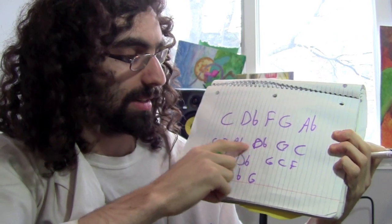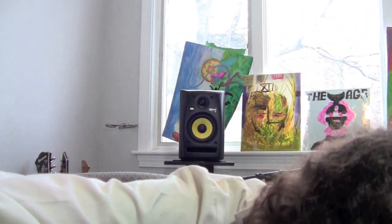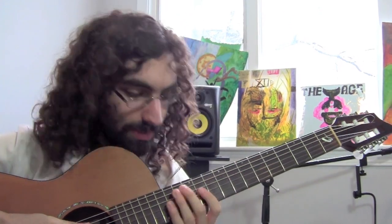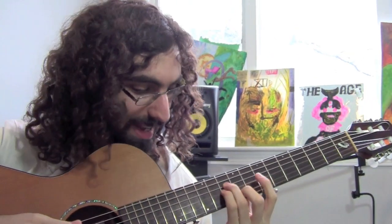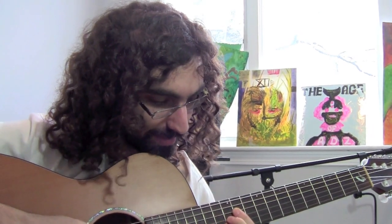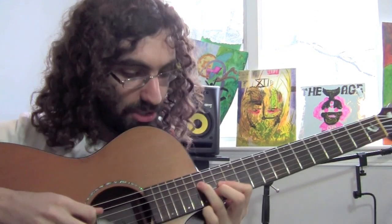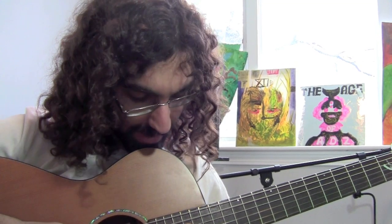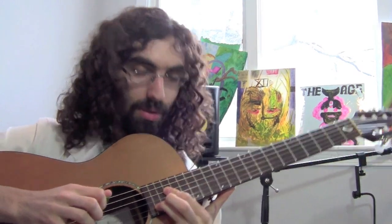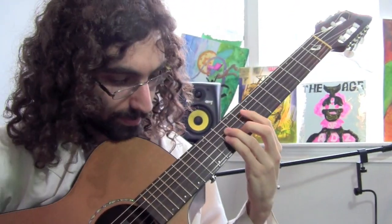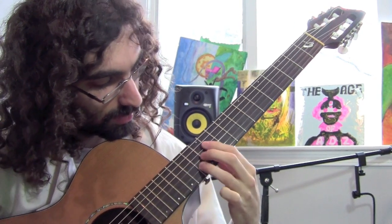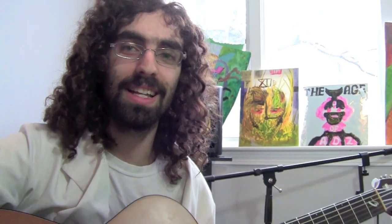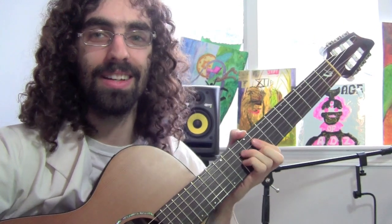Let's hear how this chord progression sounds. So first was C, F, A-flat. Then we had D-flat, G, C. Then we had F, A-flat, D-flat. Then we had G, C, F. Then finally we had A-flat, D-flat, G. It sounds like this. That's pretty!